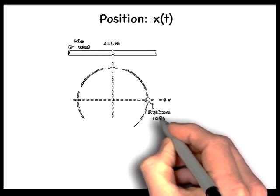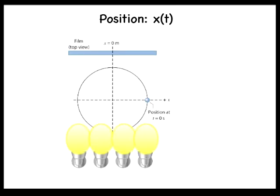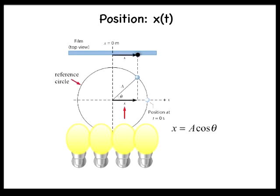We start by examining the reference circle from above. Starting at t equals 0 seconds, the ball rotates counterclockwise through an angle theta in a time t. If the radius of the circle is a, then the new position x is a cosine theta. Since the object is undergoing uniform circular motion, the angular velocity must be constant. This means that the angle theta is equal to omega times t, and x equals a cosine omega t.